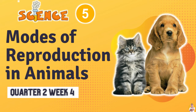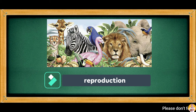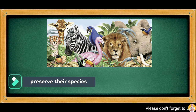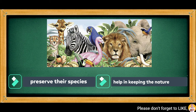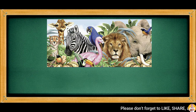This lesson will help you understand how animals produce their offspring. Animals have the means to increase their number through reproduction, to preserve their species and to help in keeping nature balanced as they interact with other animals.